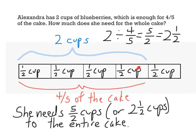I could see that if I split up my two cups of blueberries into one, two, three, four equal pieces, I would have half a cup in each piece. And so I have a half a cup in the last part of my tape diagram. Putting that all together, that is five halves cups or two and a half cups.